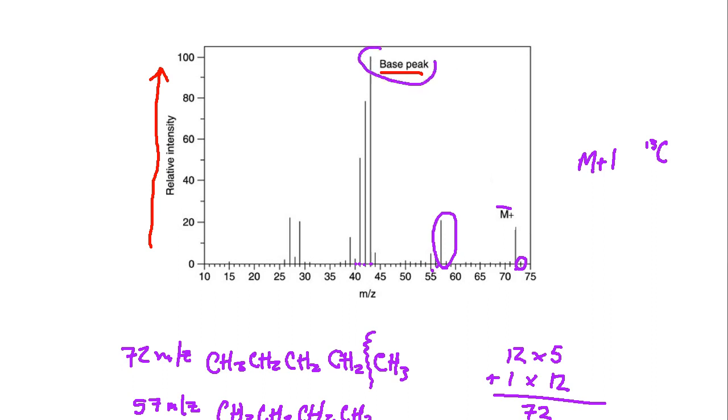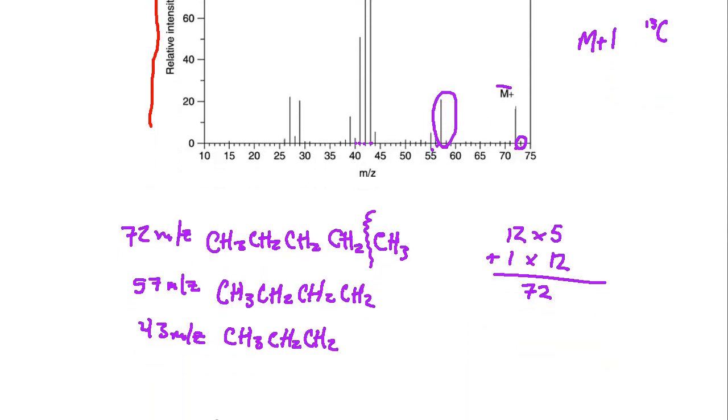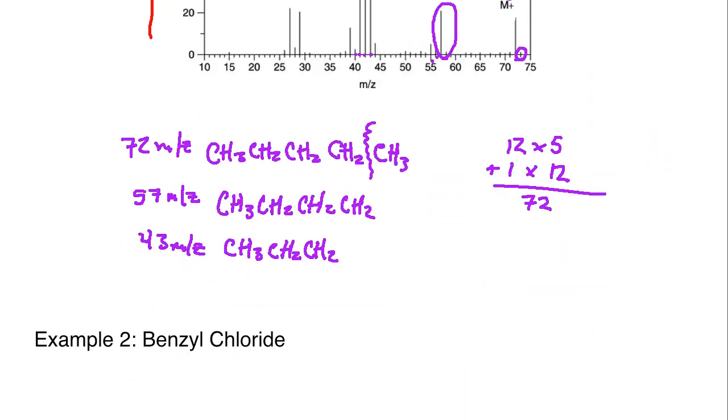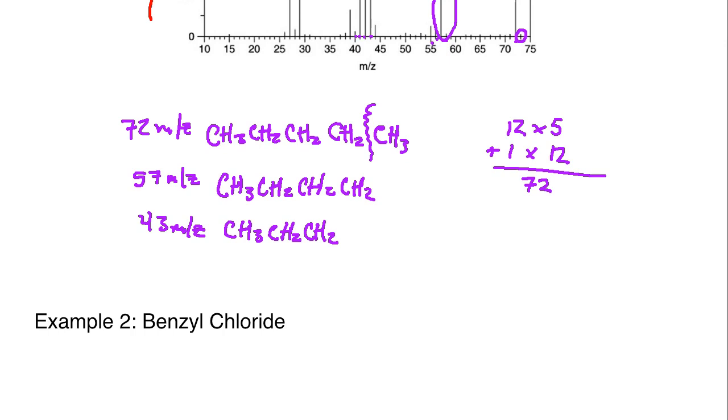The base peak is 43. Now 42 and 41 also look to be pretty decent peaks there, and what's most likely happening is we're removing hydrogens from the base peak. From this butyl group we're just taking hydrogens off, but clearly the butyl group seems to be the favored fragment for stability purposes here.